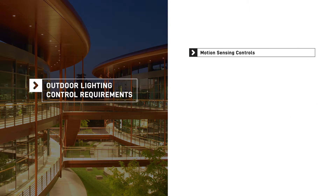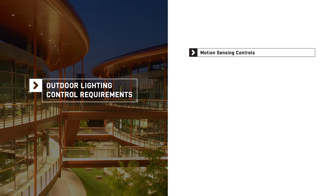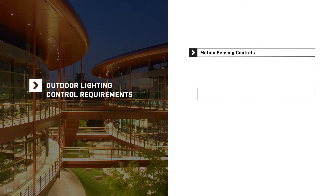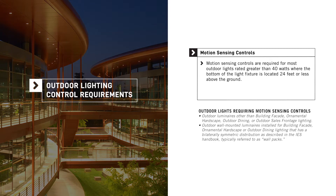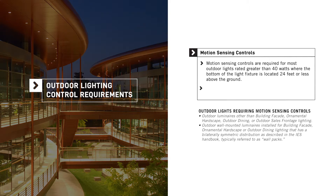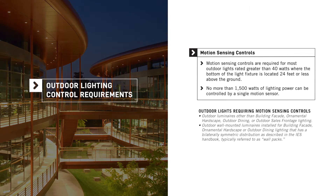Motion sensing devices control lighting based on detected occupancy by reducing or turning off the outdoor lighting in the area when that area is vacant. Motion sensing controls are required for most outdoor lights rated greater than 40 watts where the bottom of the light fixture is located 24 feet or less above ground. No more than 1500 watts of lighting power can be controlled by a single motion sensor.